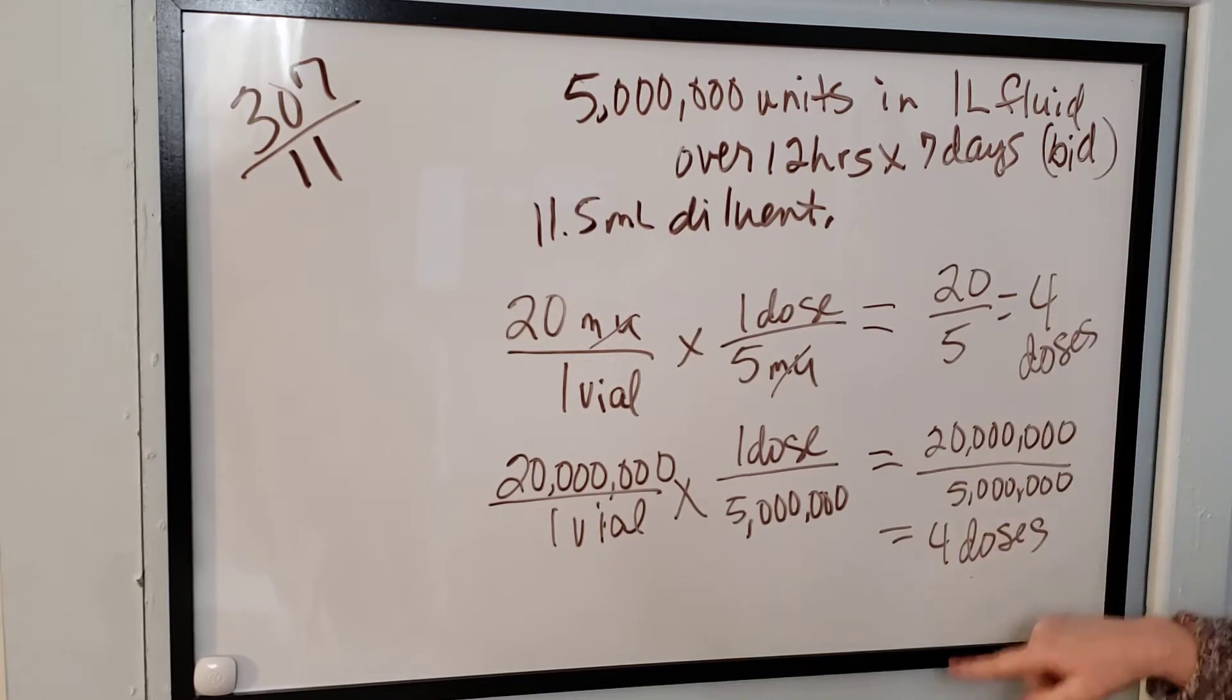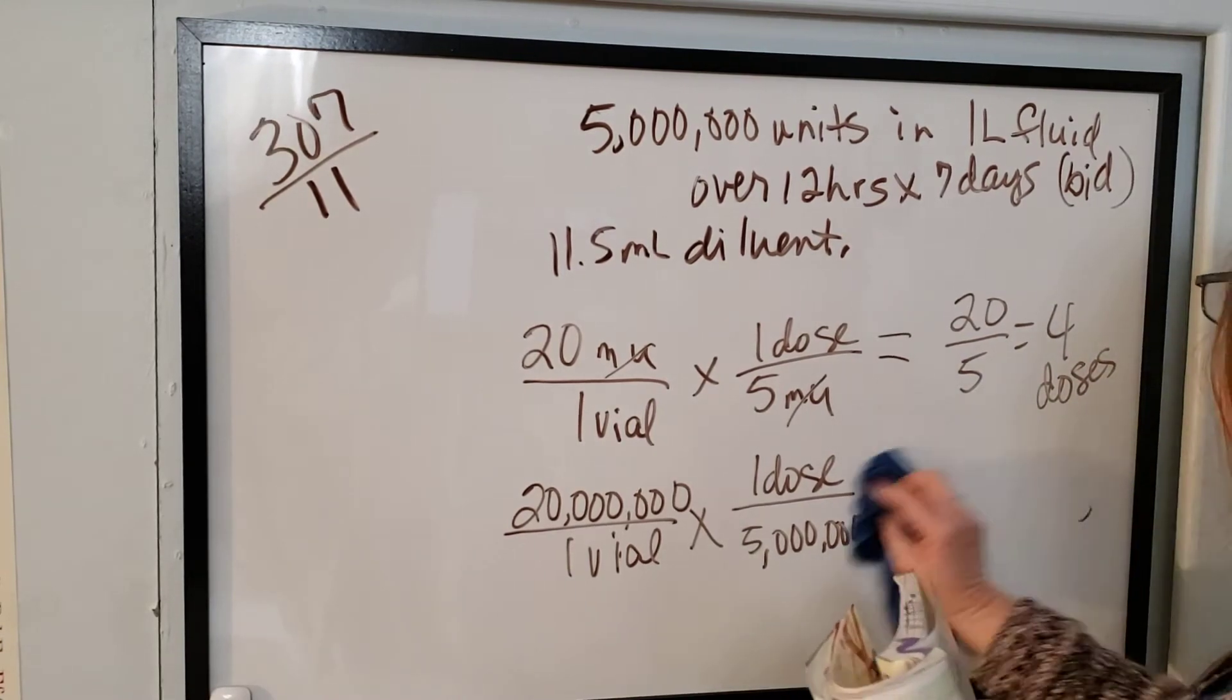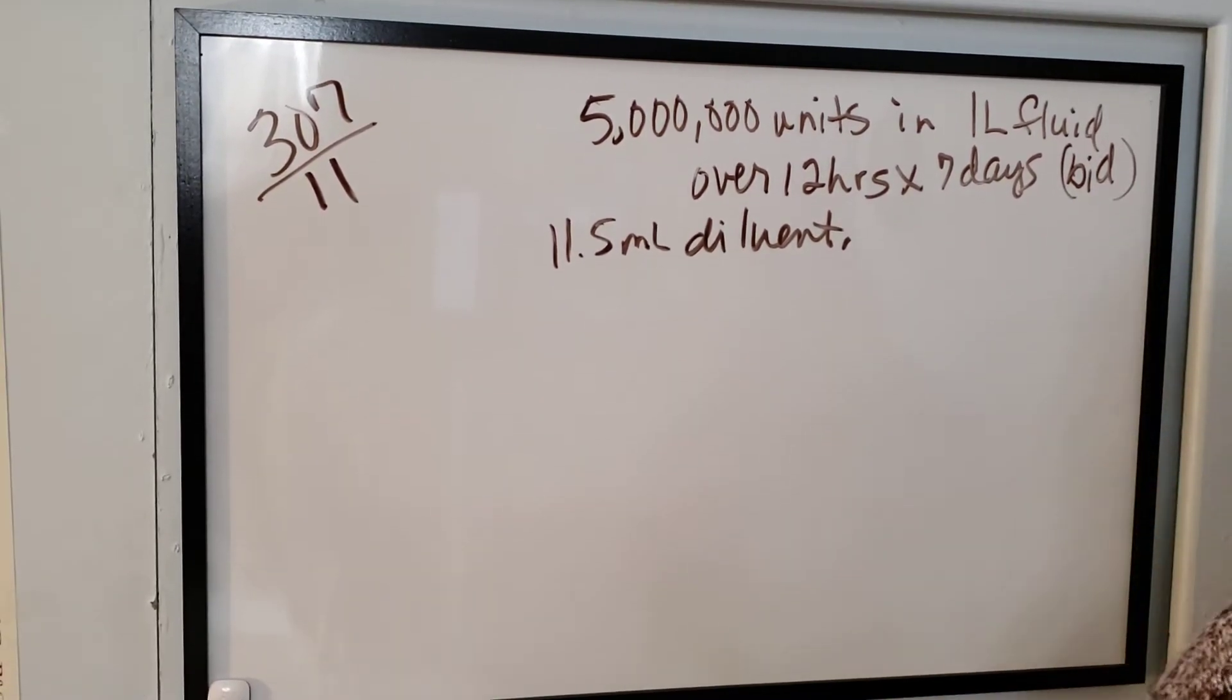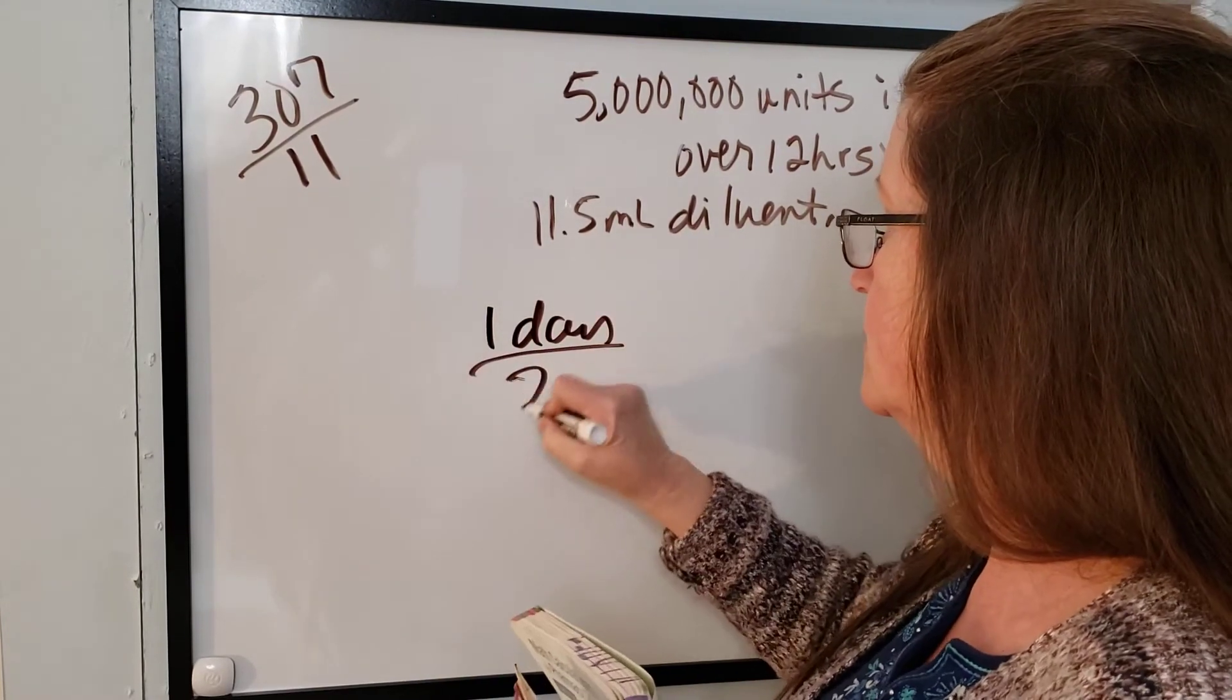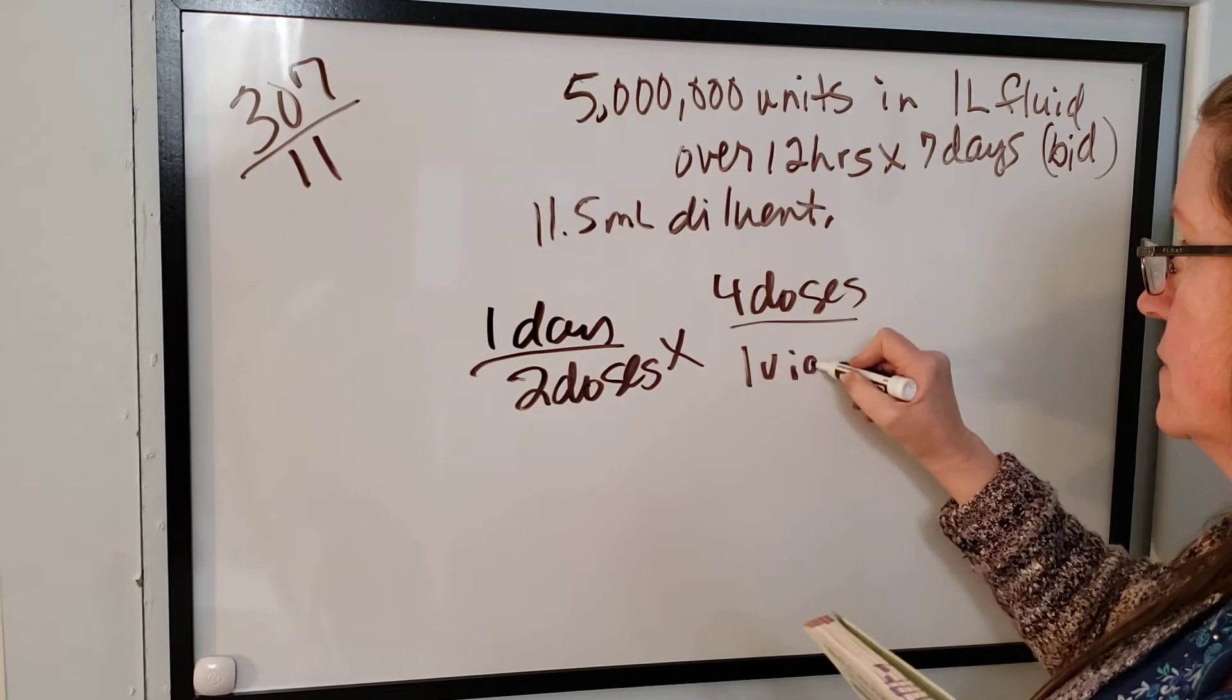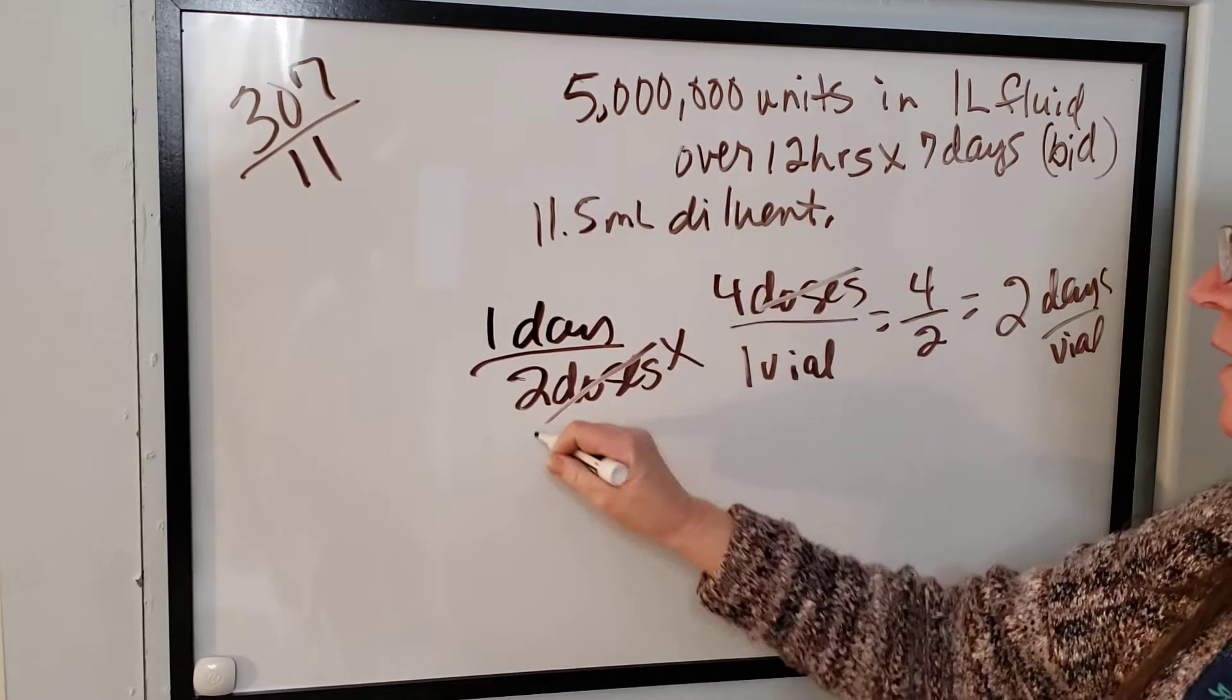Two. So four divided by two is two days. Right? So let me go ahead and write that. One day they get two doses and there's four doses in one vial. Four divided by two equals two days per vial because the doses are going to cancel.